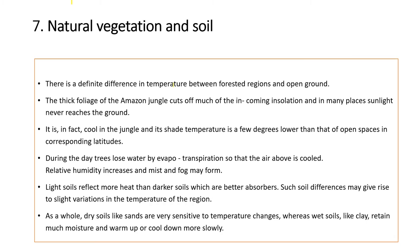The natural vegetation and soil found at a place also affects the climate of that place. Areas covered with snow and vegetation reflect most of the solar heat received at the surface. Due to this, high temperatures are not found in those regions.